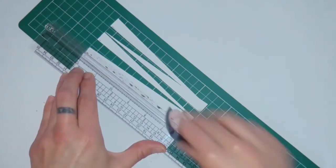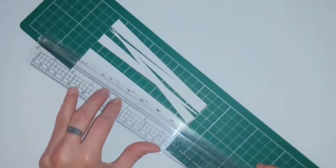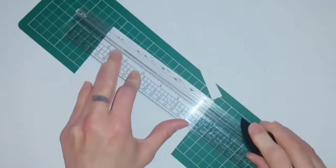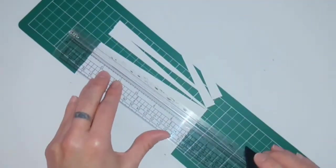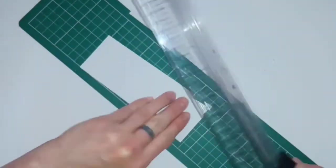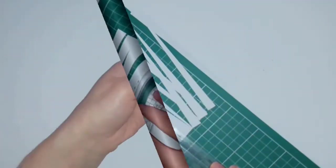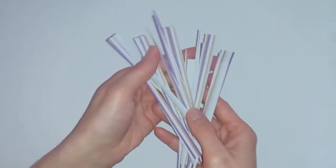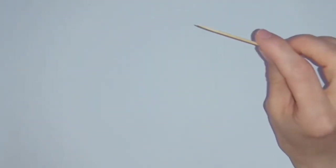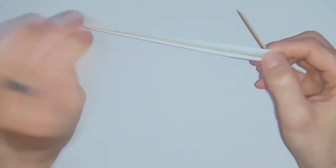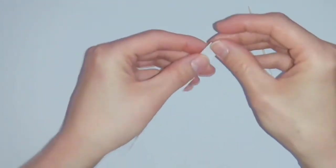You should end up with something that looks like this. Next, you want to take a cocktail stick or something else that you can wrap your paper around.